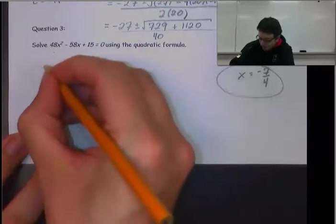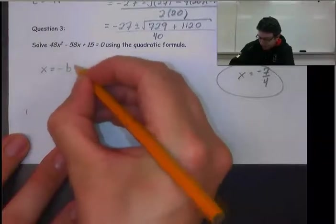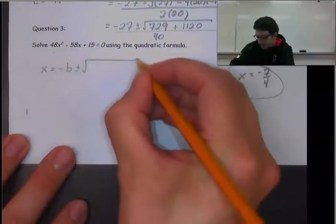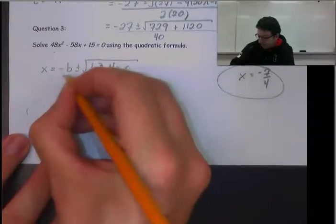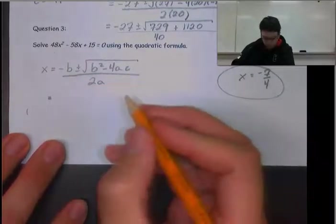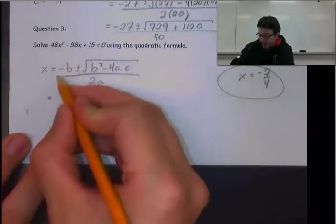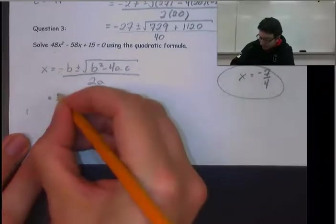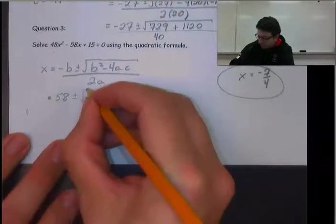When we use our equation, x = -b ± √(b² - 4ac) over 2a. So -b - if you want, you can realize that's a negative and that's a negative, so it's just 58. But if you're not comfortable doing that, use the brackets like we did before.